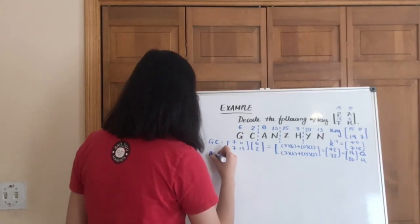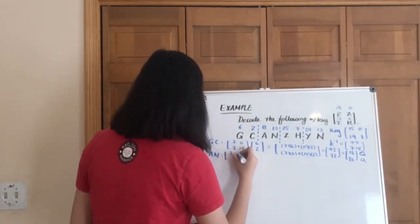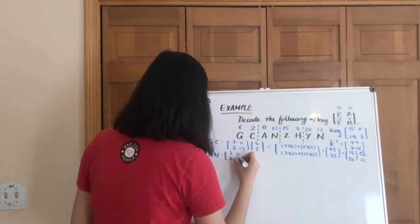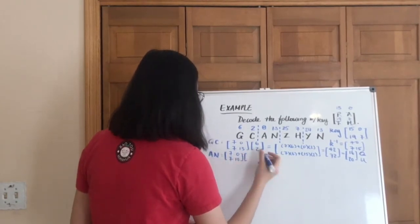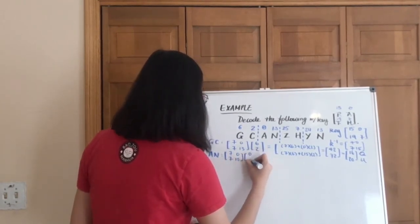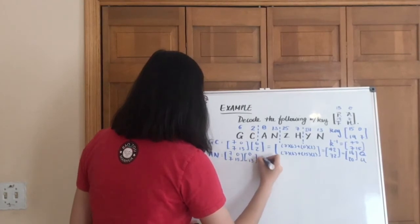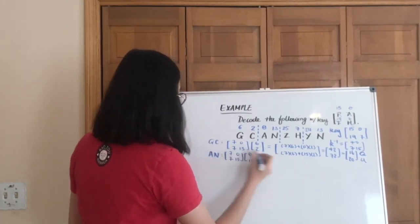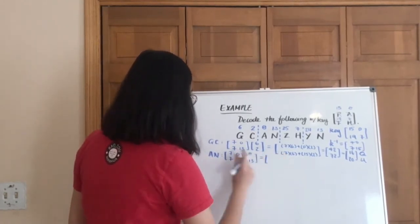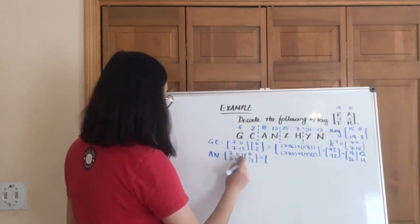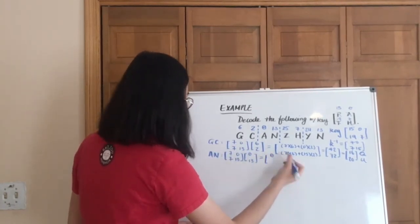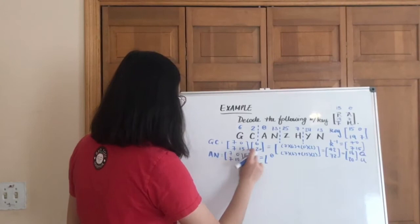And then let's move on to the second one, A and N. So again, always key first. And then your ciphertext, 0, 13. So this is going to be just 0 on top, because 7 times 0 plus 0 times 13, just 0.